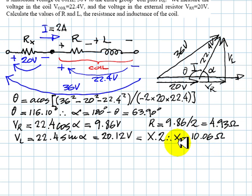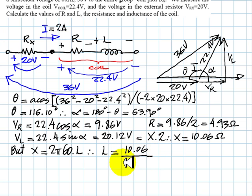But the reactance of an inductance is 2 pi F times L, like so. Which means that the inductance can be obtained directly as 10.06 divided by 2 pi 60, which is approximately 377. That is 26.68 mH. And that is the answer of this problem.